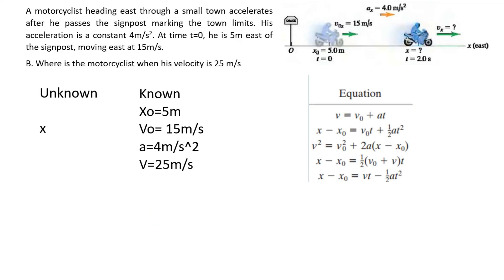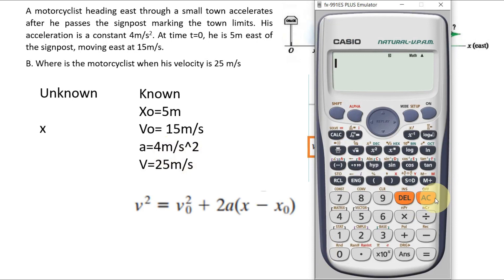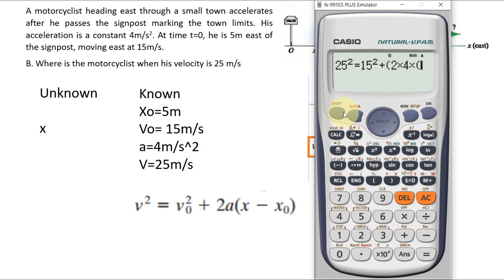Where is the motorcyclist when his velocity is 25 m per second? We are looking for his final position given: final velocity of 25 m/s, initial position of 5 m, initial velocity of 15 m/s, and acceleration of 4 m/s². We can use the third kinematic equation. We have: final velocity squared (25²) equals initial velocity squared (15²) plus 2 times acceleration (4) times (final position minus initial position).